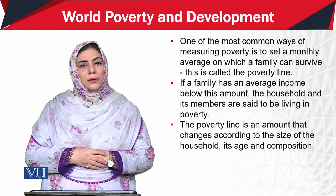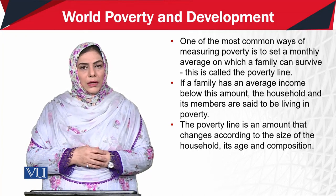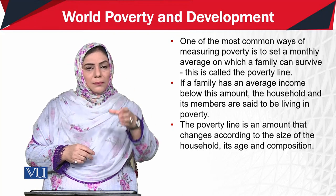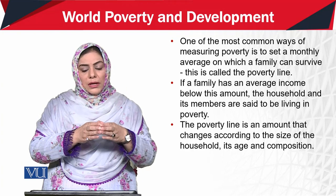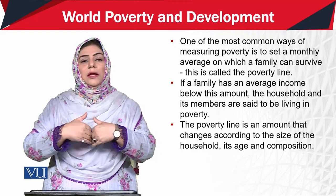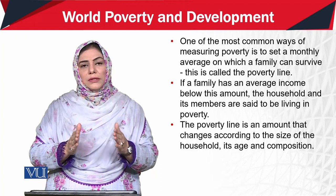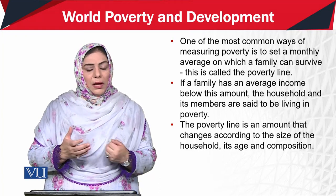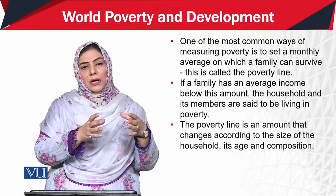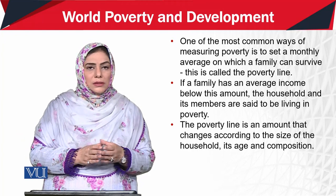If we look at an easy method to measure poverty, the formula applied is to set a monthly average on which a family can survive. We look at what average monthly income or package allows a family to live above the poverty line — that is, what income and resources are needed for a household to escape poverty and live a better life. This also takes into account what basic household needs exist in urban and rural areas.